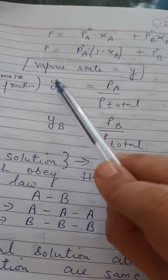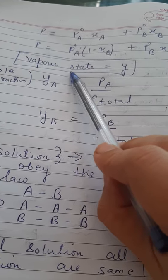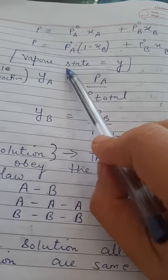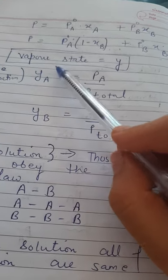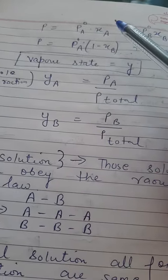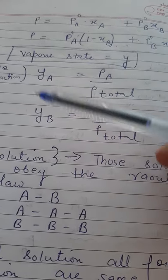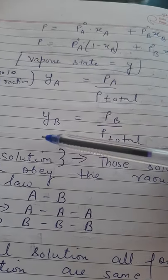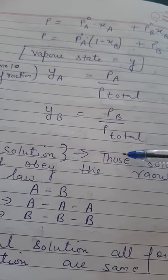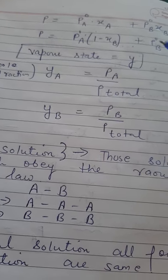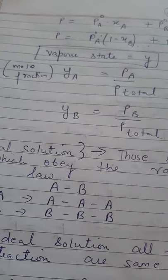If I talk about vapor state, the equation is PB upon P total. This is all about Raoult's law.